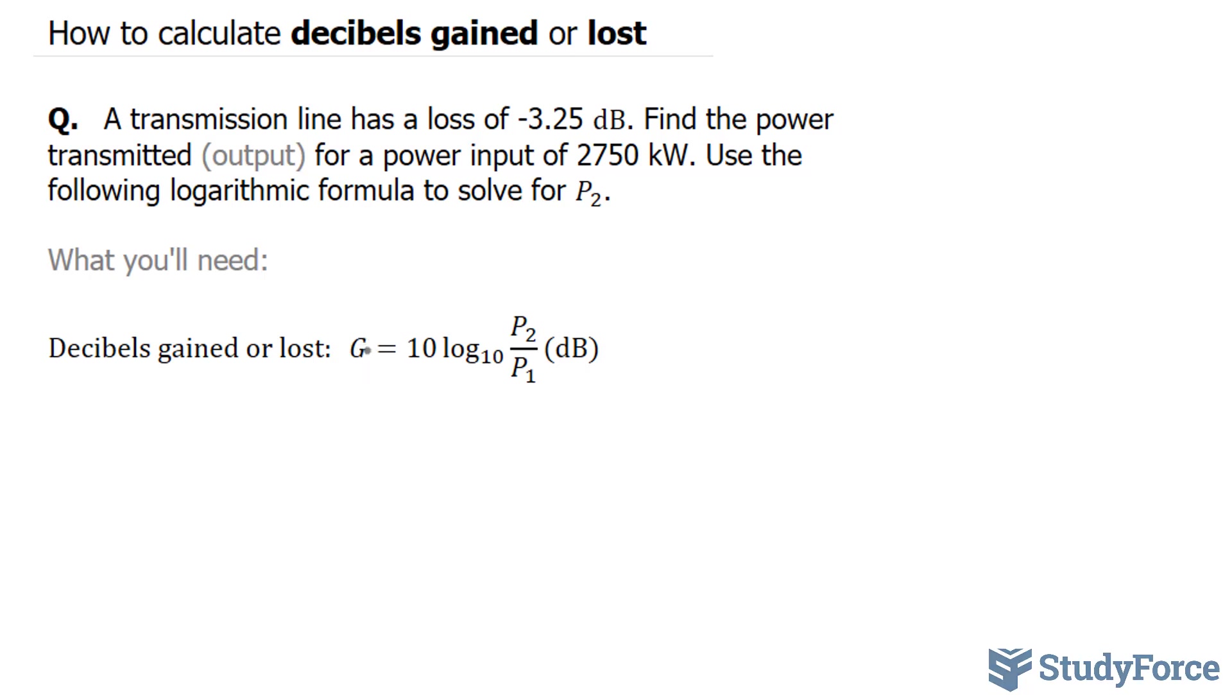We are told that G, which represents the decibels gained or lost, is equal to negative 3.25 decibels. Furthermore, we are told the input, which will be represented as P1, of 2750 kilowatts.